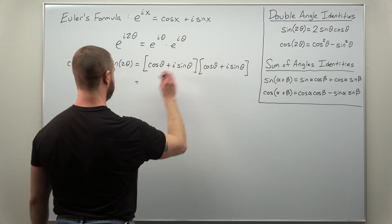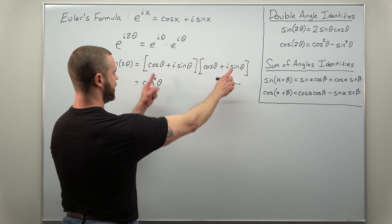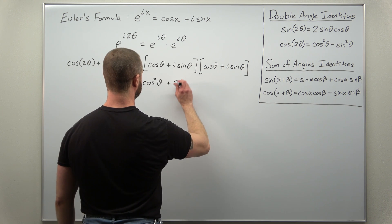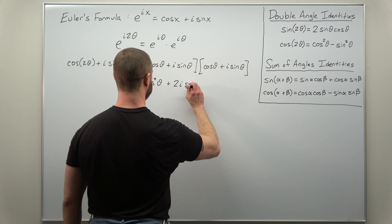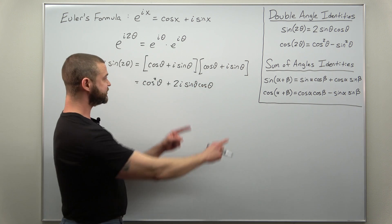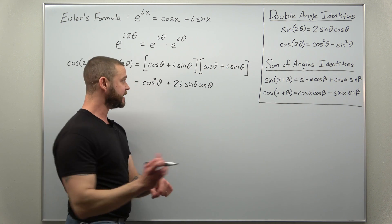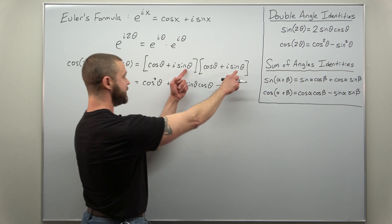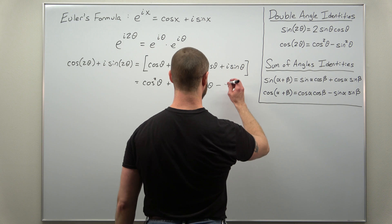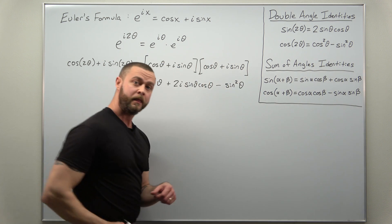If we expand that, the first terms give cosine squared of θ. The outers and inners come out to be the same, giving plus 2i sinθ cosθ. For the last terms, be careful — you have i times i, which is i squared, equal to negative one, times sine squared of θ.